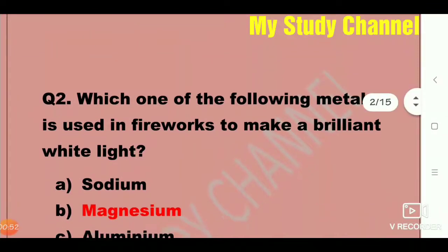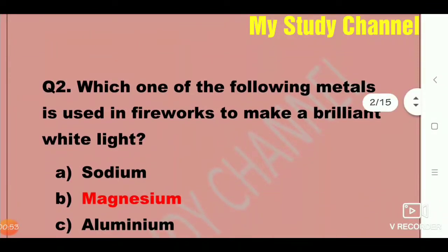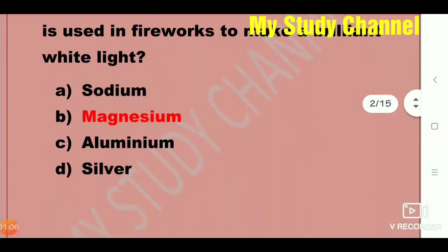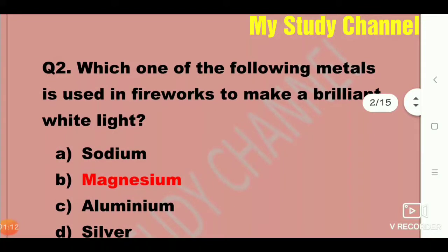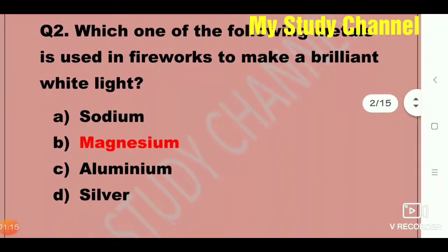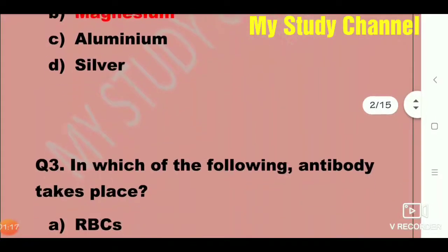Next question: Which one of the following metals is used in fireworks to produce a brilliant white light? Option A is sodium, B is magnesium, C is aluminium, and D is silver. Here option B is the right answer — that is magnesium. Magnesium is used in fireworks to produce a brilliant white light.